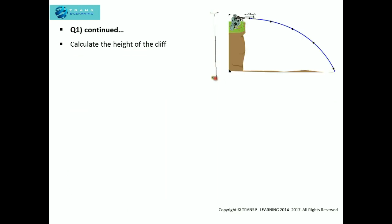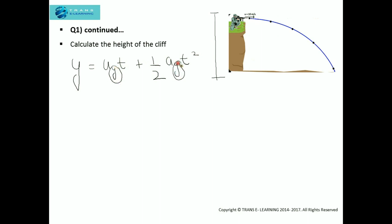To find the height of the cliff, we consider the vertical motion of the projectile. The vertical motion equation is: y = u_y·t + ½·a_y·t². The subscript y represents vertical motion. Since the projectile moves with constant acceleration in the vertical direction, the initial vertical velocity u_y is 0, and the acceleration along the y-axis equals g. So y equals the height h.